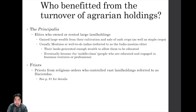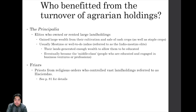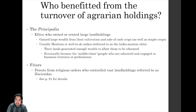In this setting of the turnover of agrarian holdings, the principalia and the friars were the main beneficiaries of the transition into cash crops, but there were losers as well — not just the weavers of Iloilo, who lost much of their trade and craft due to cheap British textiles once the economy opened up to foreign trade. There are consequences in regards to agrarian holdings gradually transitioning to a cash-crop-dominated export economy.